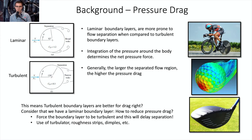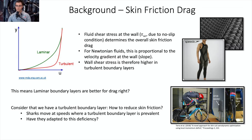Turbulent boundary layers are better for reducing pressure drag, while laminar boundary layers are better for skin friction — they produce less fluid shear stress at the wall. Fabrics use boundary layer trip devices to transition the boundary layer to turbulent. For skin friction in turbulent flows, biomimicry concepts like mimicking shark scales have led to developments like the Speedo LZR swimsuit, which produced a significant reduction in skin friction drag, causing world records to fall.